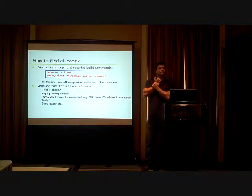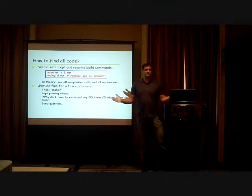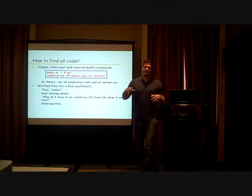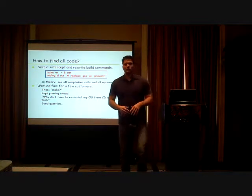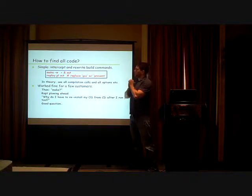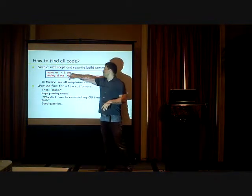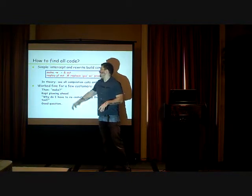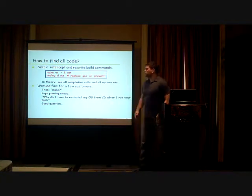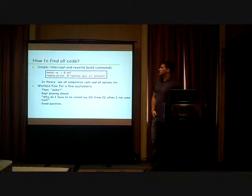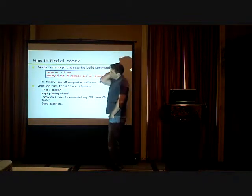For finding code, we grab it during the build process. You don't want to do a recursive find through a directory because you get random crap. If you grab it during the build, you see exactly what they're trying to build. The first approach we had was to do 'make -w,' which tells you what directory you're in. We'd save this to a file, then do a search and replace swapping out gcc or cc for our analysis tool. This worked fine for four customers.